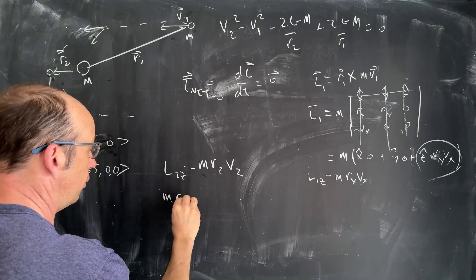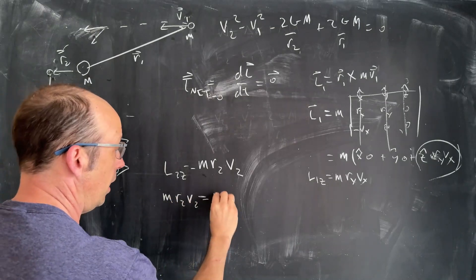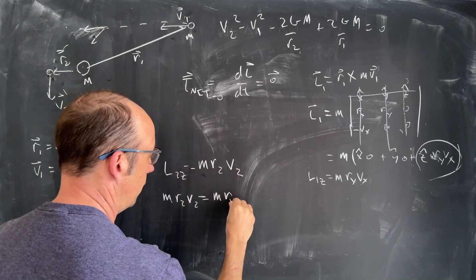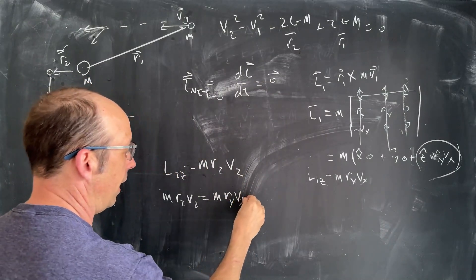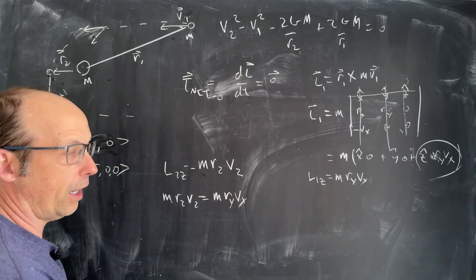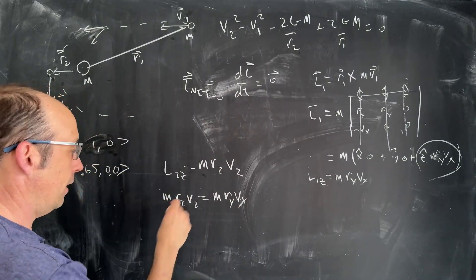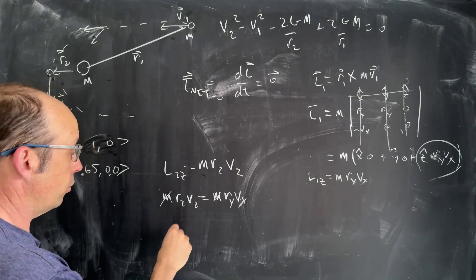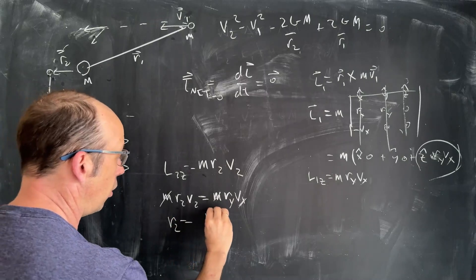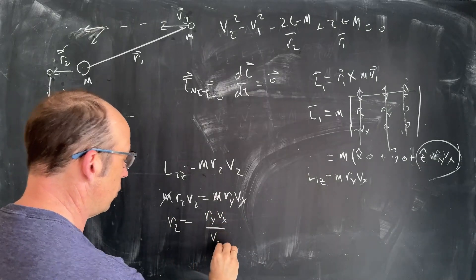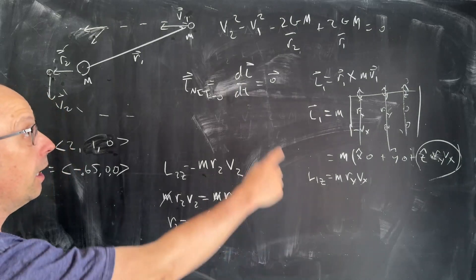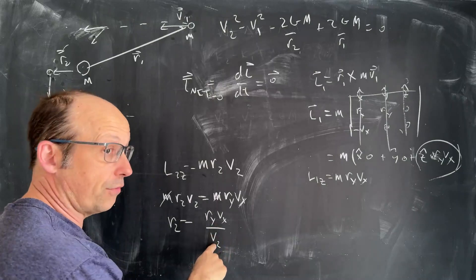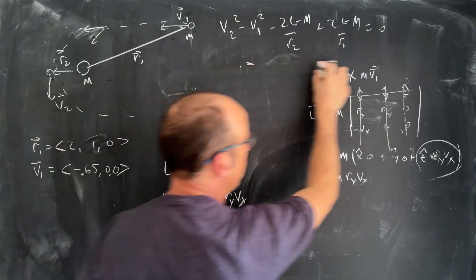So this has to be equal to that. So MR2V2 is equal to M, I'm going to call that R_y, I know that, V_x. I'm just going to call it that. It's really V1x and R1y, but the mass cancels. And now here we can solve for something, right? I can solve for R2. So R2 is going to be equal to R_y V_x over V2.